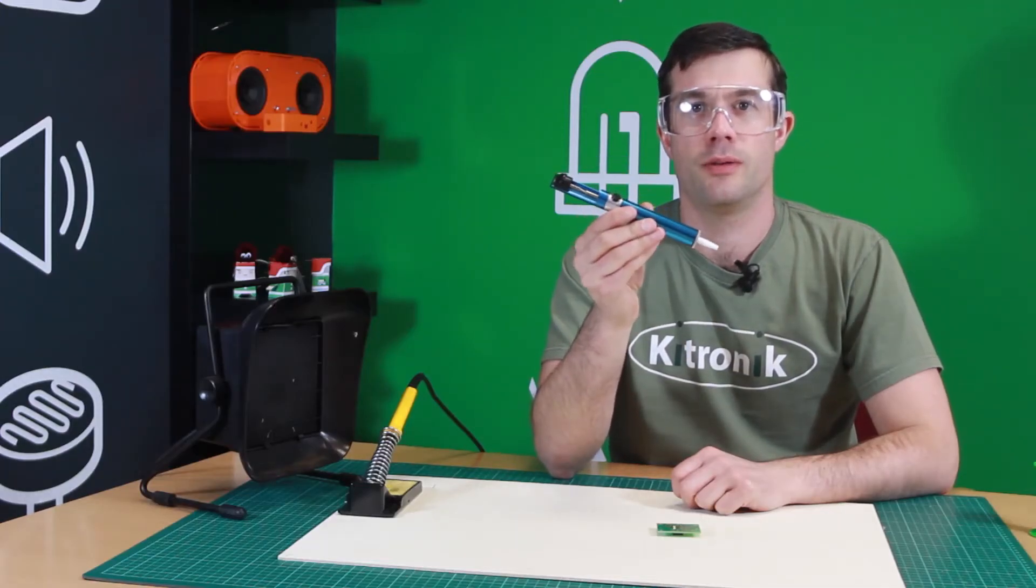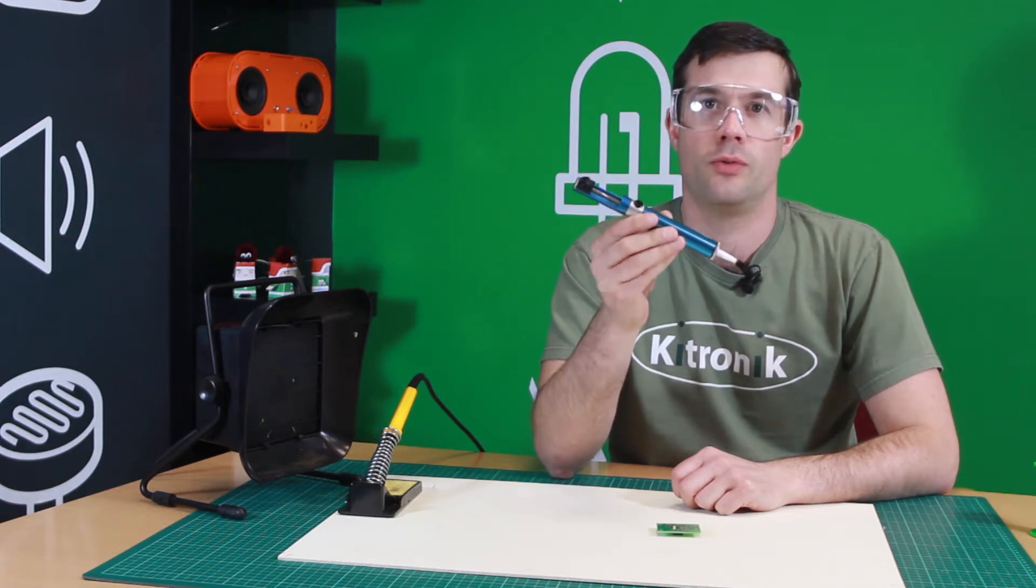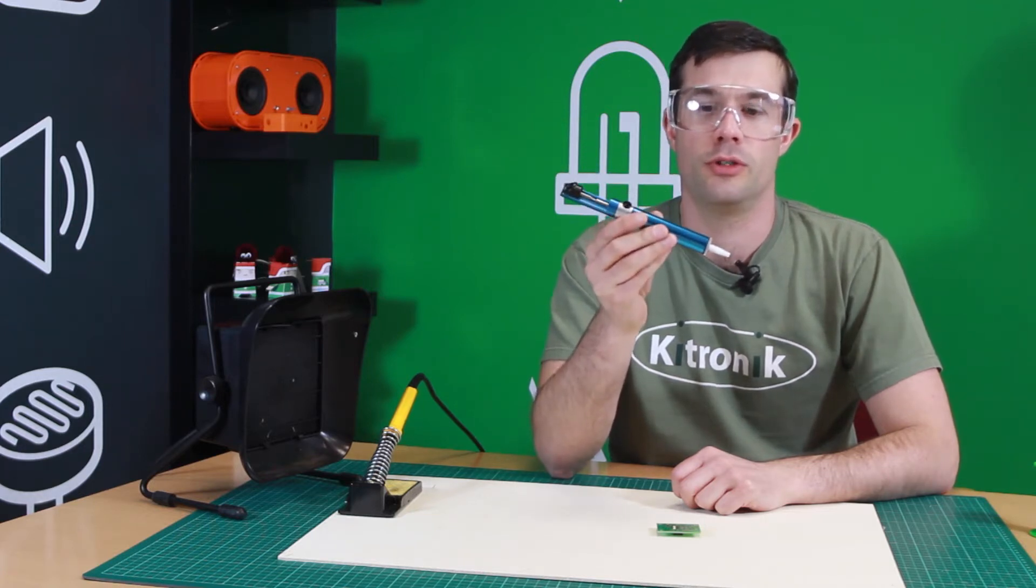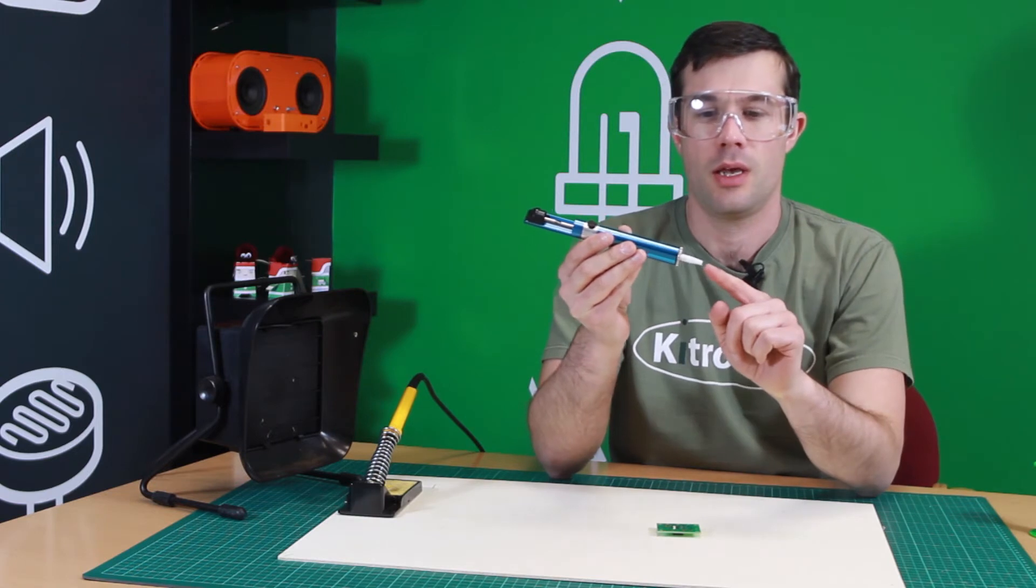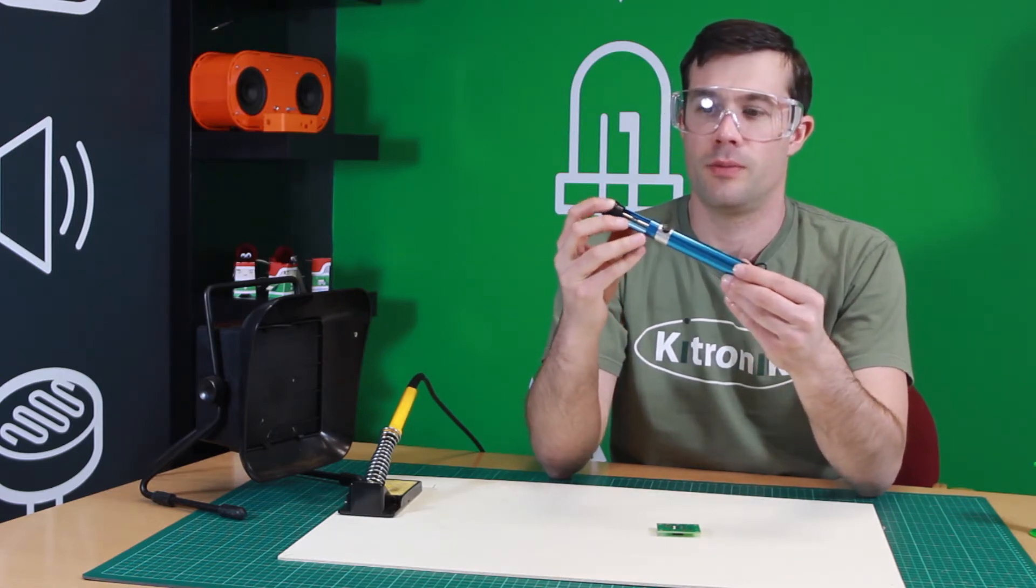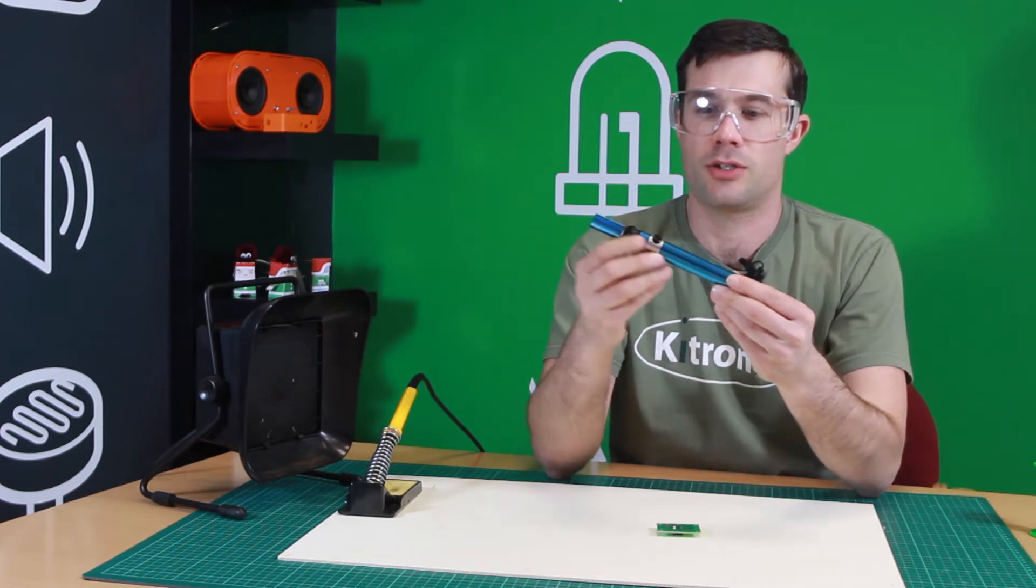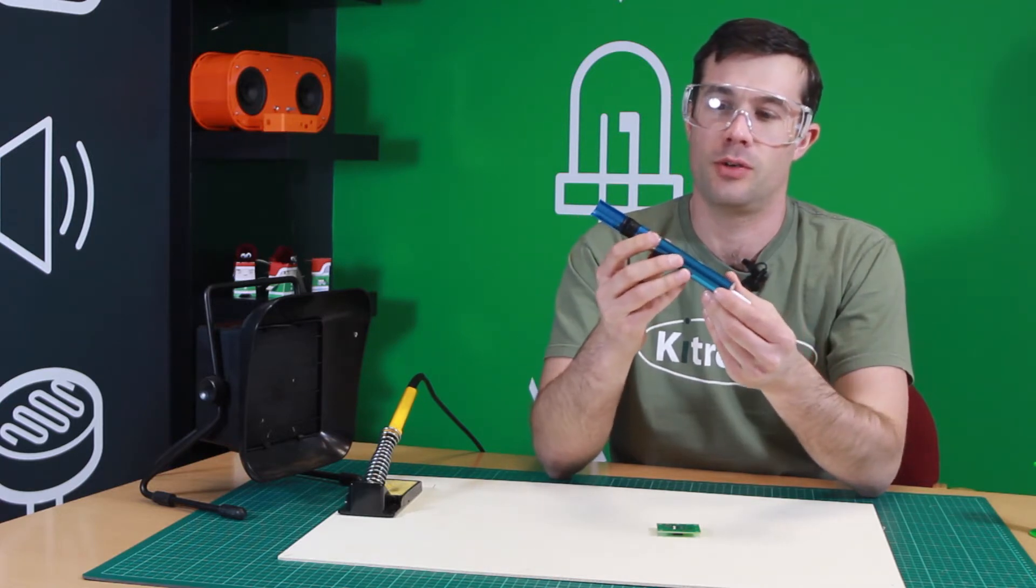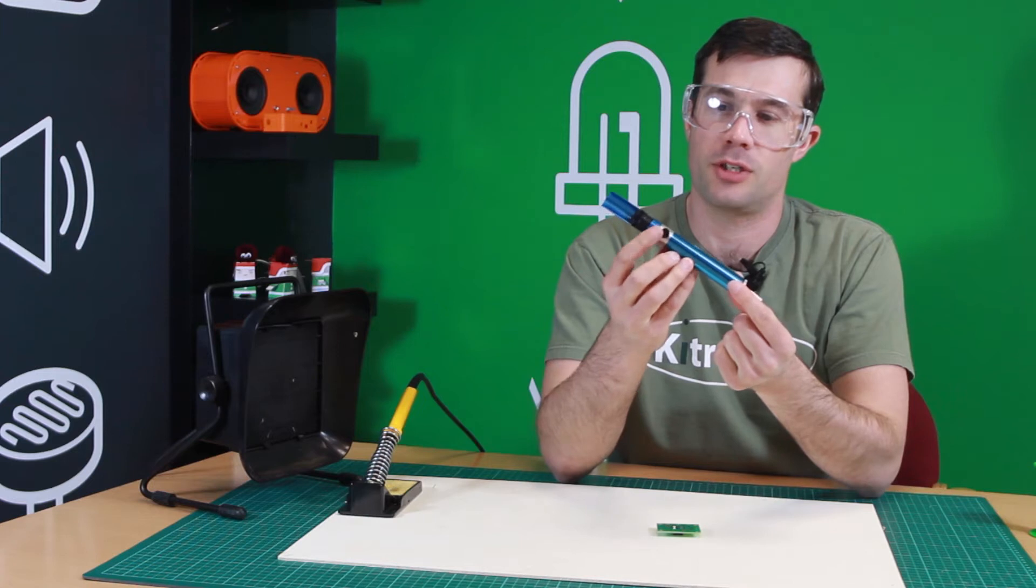So this is a solder sucker, and it's a very commonly used tool for removing excess solder from joints. Here we have a nozzle, and then here we have a plunger. This depresses and squashes a spring on the inside. We can then release it by pressing the button here.